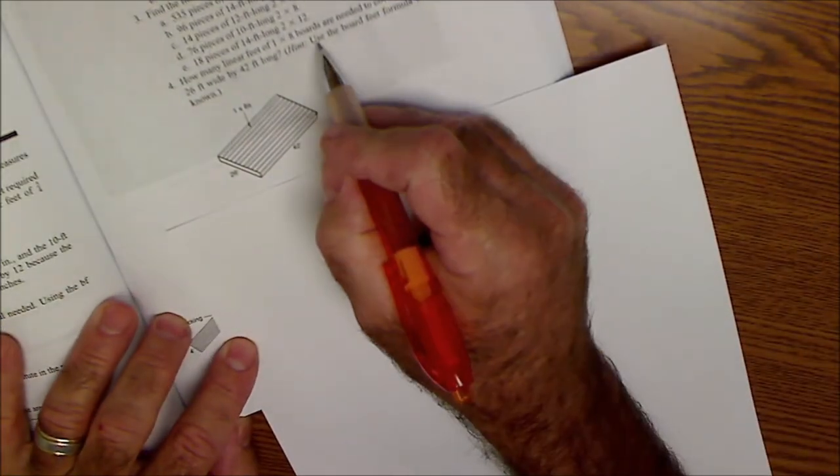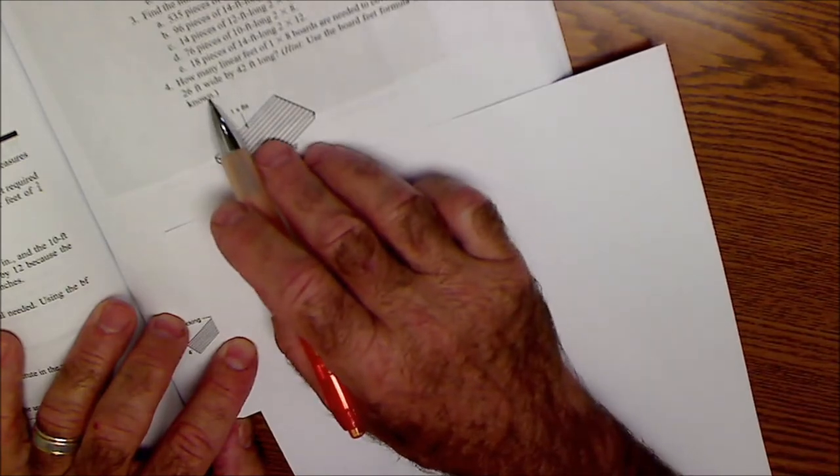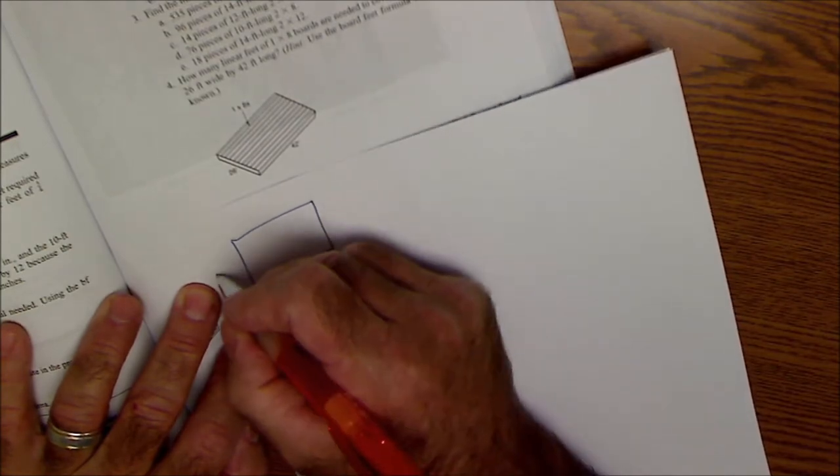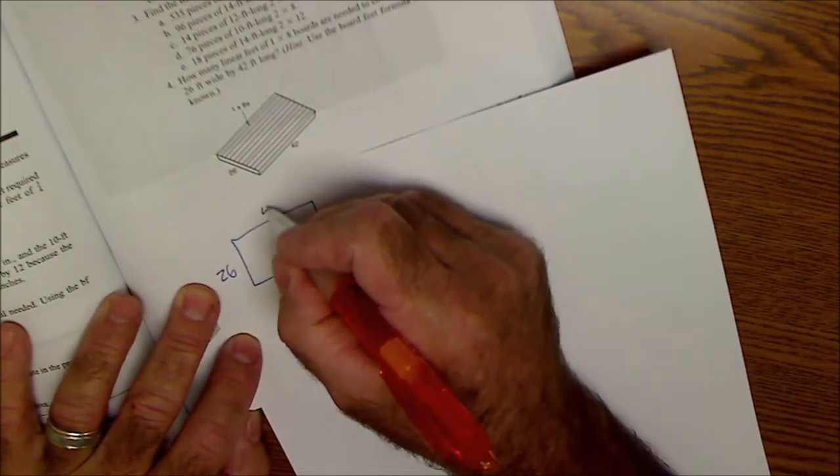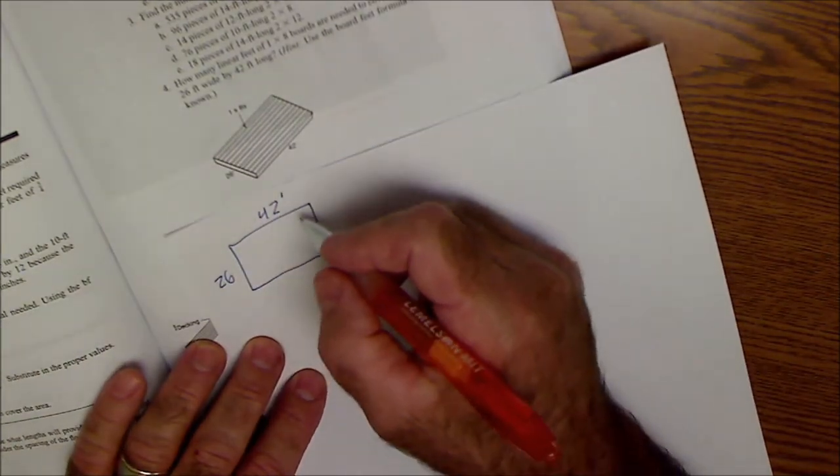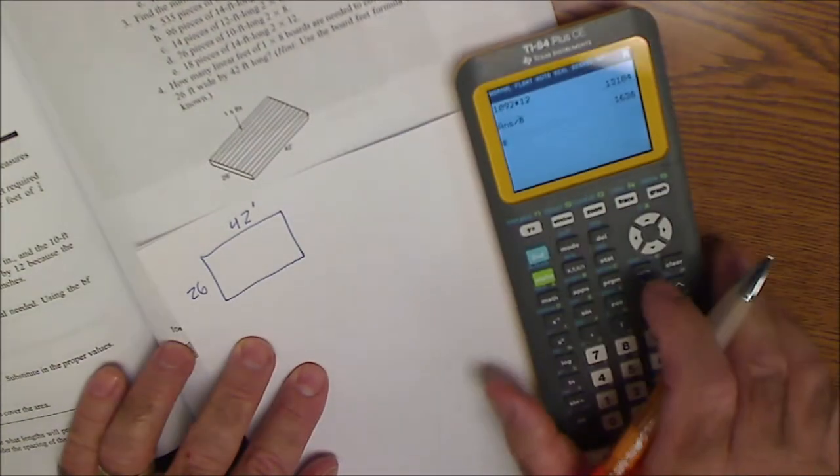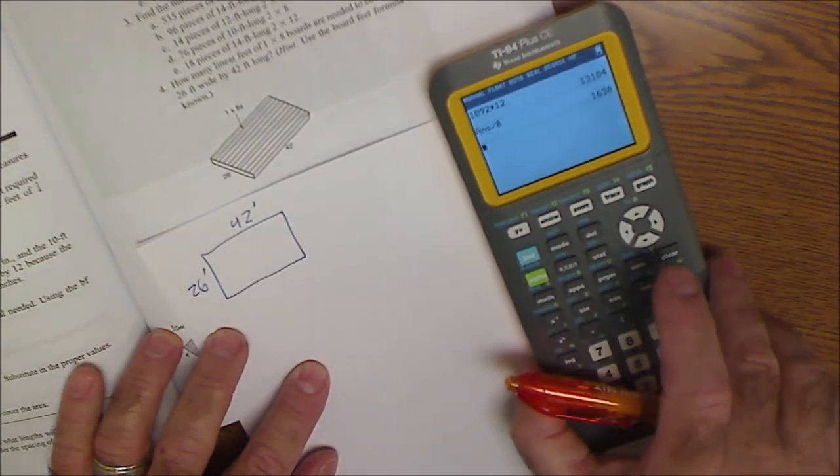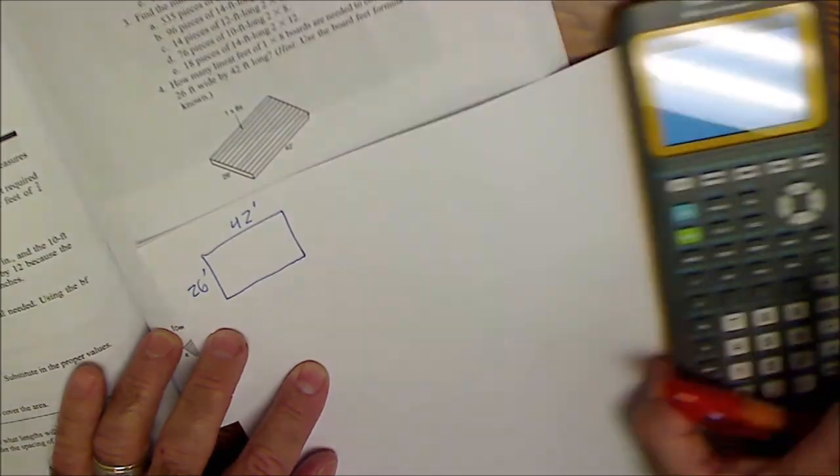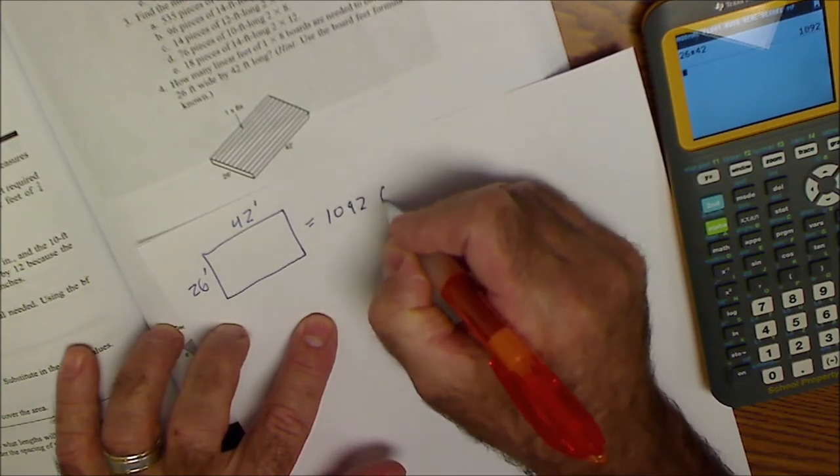Let me jump down to number 4 here. How many linear feet of 1x8 boards are needed? So I'm looking for a linear foot of 1x8s of subfloor that's 26 feet by 42 feet. The boards are 1x8, so it's 1 inch thick. So I could figure out the total square footage of this area. So I'm going to do that by going 26 feet times 42 feet. So 26 times 42 is 1092. So this subfloor is 1,092 square feet.